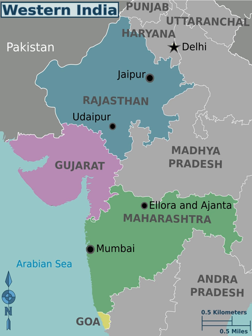Western India is a loosely defined region of India consisting of its western part. The Ministry of Home Affairs in its Western Zonal Council Administrative Division includes the states of Goa, Gujarat, and Maharashtra along with the Union Territory of Daman and Diu and Dadra and Nagar Haveli, while the Ministry of Culture and some historians also include the state of Rajasthan.